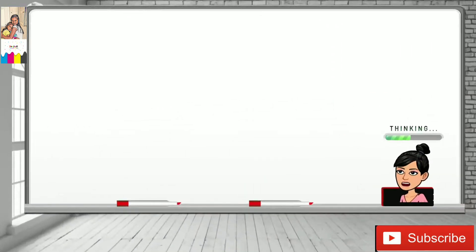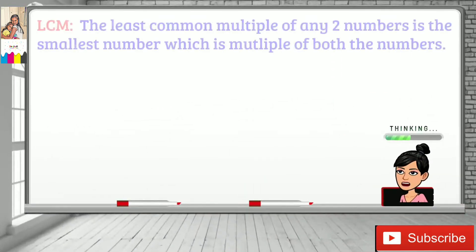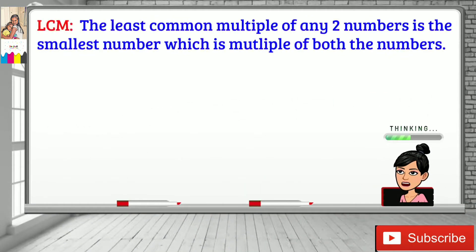So now, what is LCM? The least common multiple of any two numbers is the smallest number which is a multiple of both the numbers.